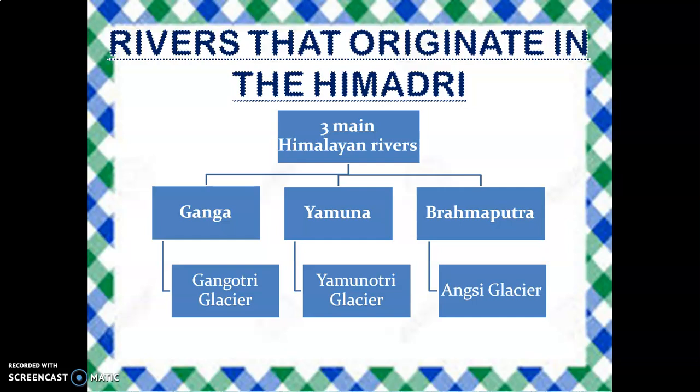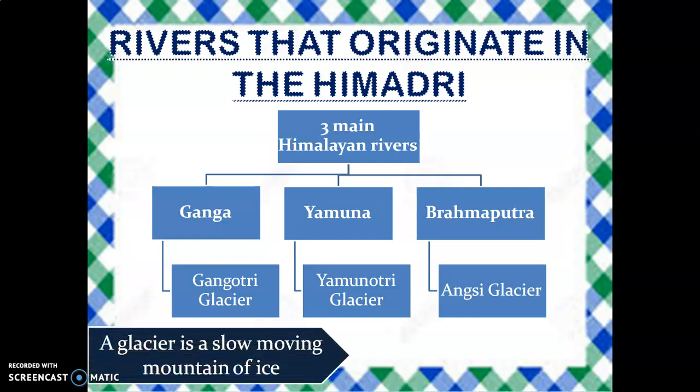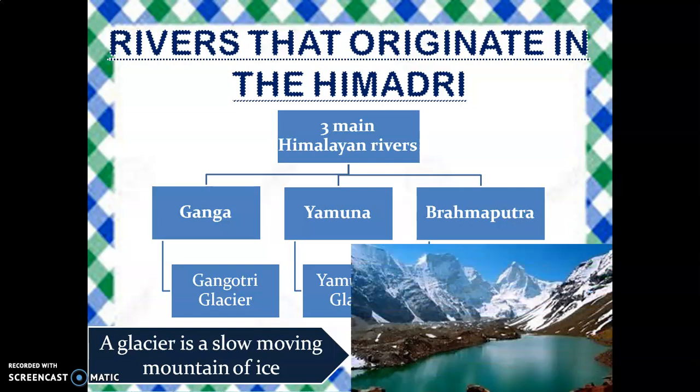The three main Himalayan rivers that originate in the Himadari are Ganga, Yamuna, and Brahmaputra. Ganga originates from the Gangotri glacier, Yamuna from the Yamunotri glacier, and Brahmaputra from Angsi Glacier. A glacier is a slow-moving mountain of ice. When it starts melting, it takes the form of a river.